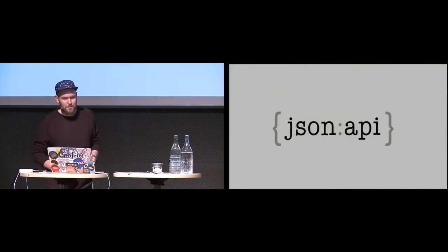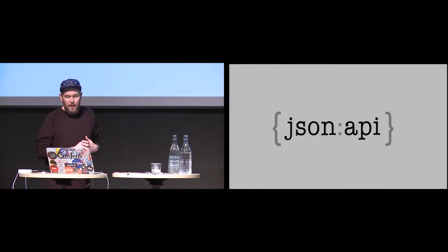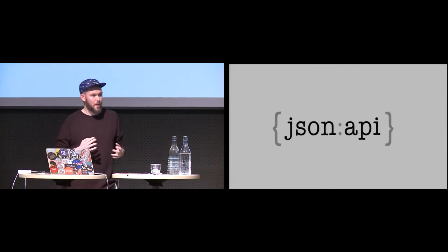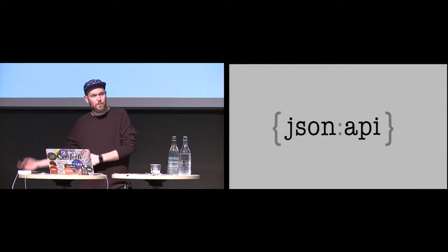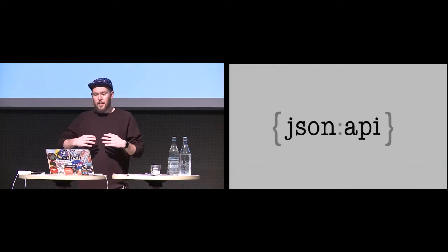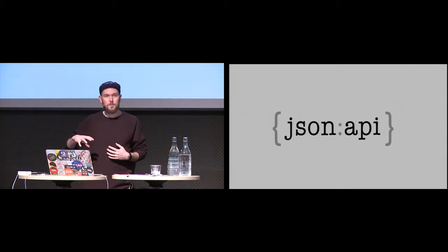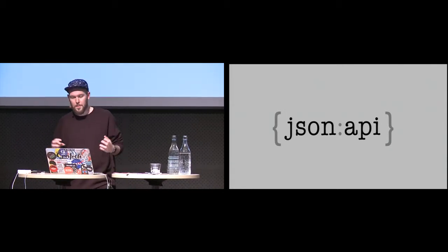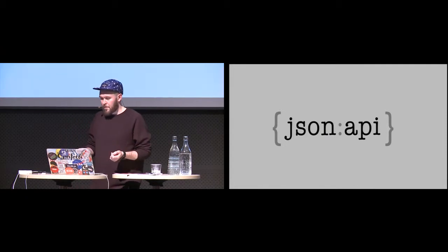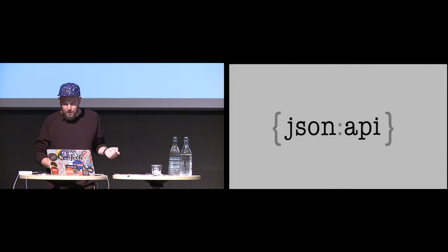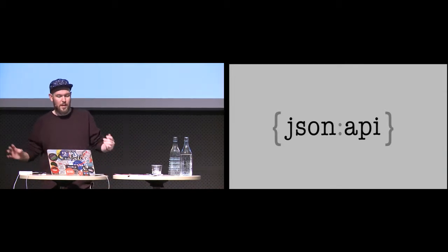Enter JSON API. This will be our approach for solving this. Version 1.0 is released now, and they have a philosophy of 'only add, never remove.' The idea is that newer clients can always read APIs built with an older version of the spec.